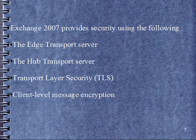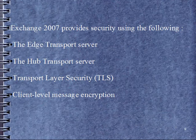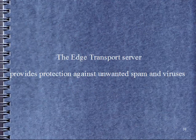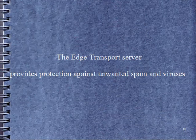Exchange 2007 provides security using the following: the Edge Transport Server, the Hub Transport Server, Transport Layer Security, Client Level Message Encryption. The Edge Transport Server provides protection against unwanted spam and viruses.